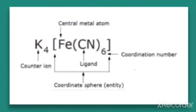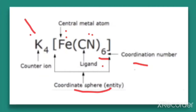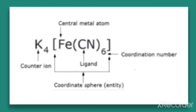These are the different terms used in a coordination compound formula. Fe is the central metal atom, bonded to a negatively charged ligand CN. The fixed number of ligands attached — 6 here — is called the coordination number. The whole entity of the central metal and the ligands within the bracket is called the coordination sphere, and K4 is the counter ion. The details of these terms will be discussed in the next video.